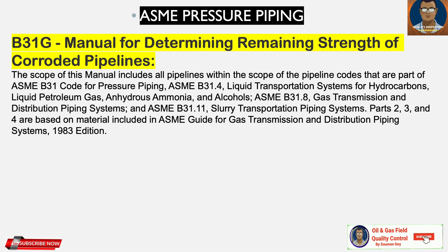The B31G manual is for determining remaining strength of corroded pipelines. The scope of this manual includes all pipelines within the scope of pipeline codes that are part of the ASME B31 code for pressure piping.